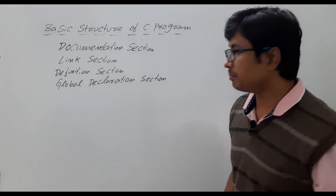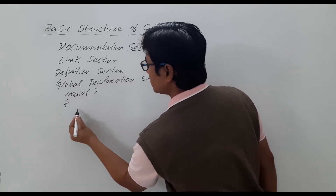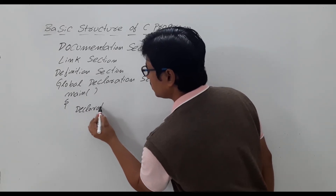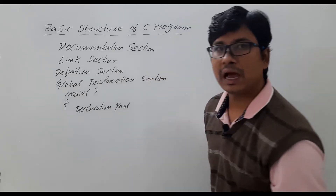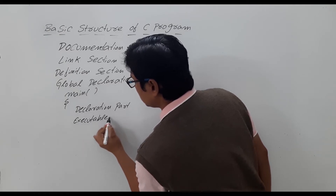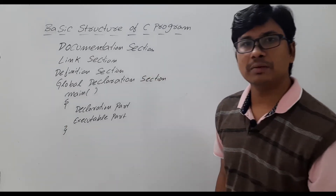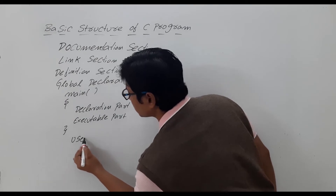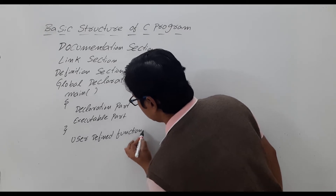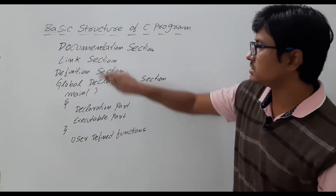Then we will have the main function. The main function consists of two parts: one is the declaration part, and then the executable part. Once the main function is completed, you will have the sub programs or user-defined functions.